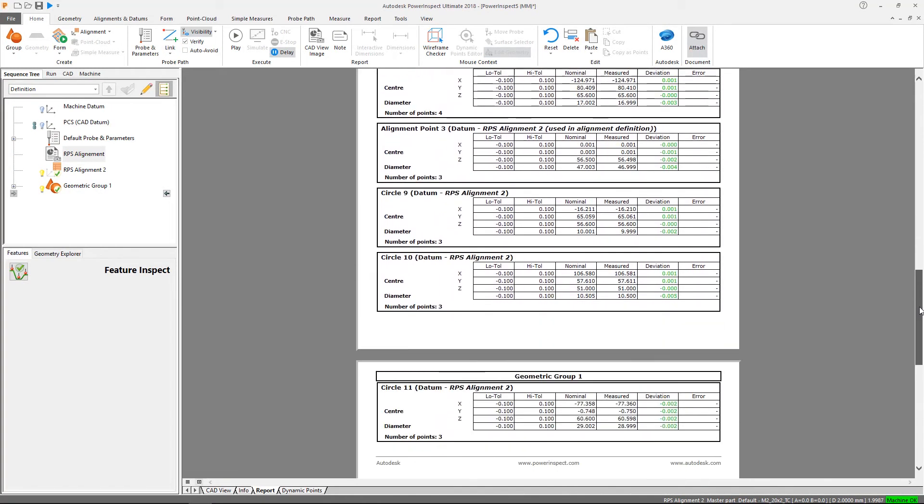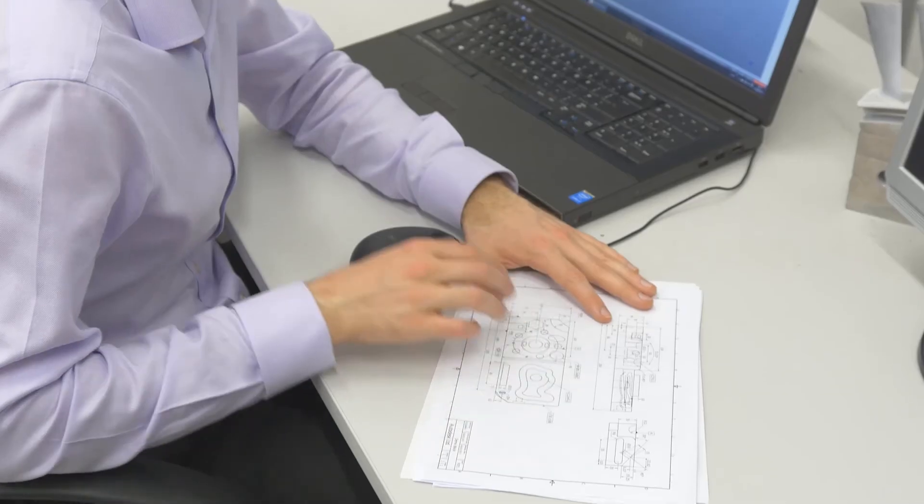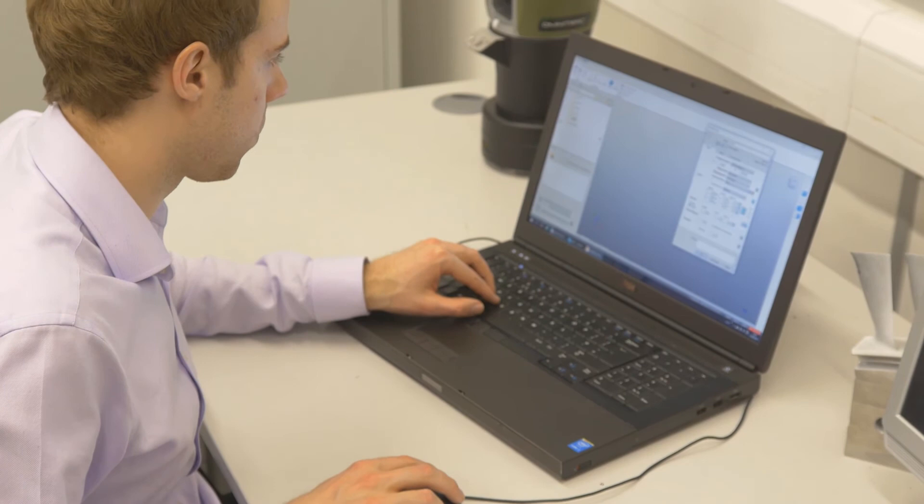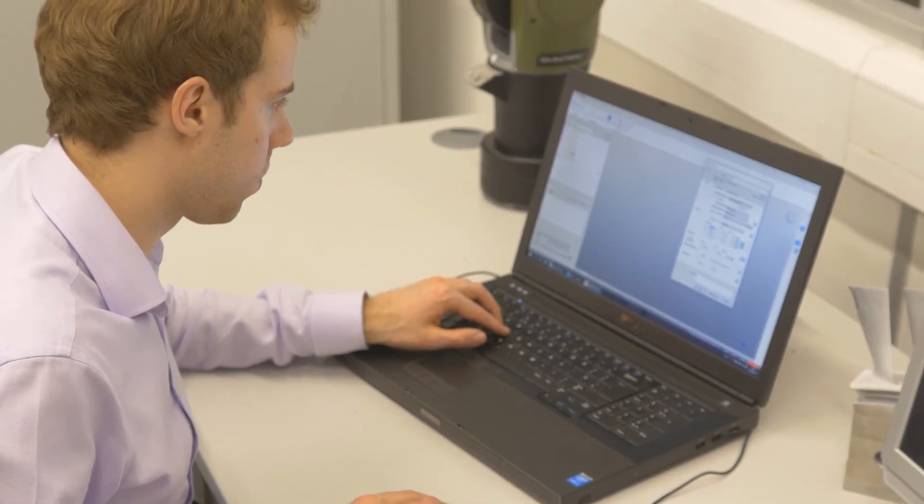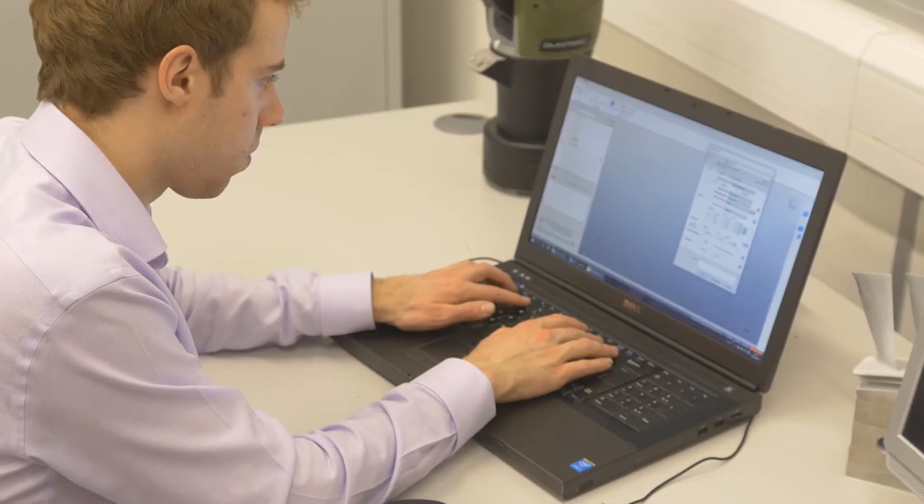PowerInspect is also very proficient at inspection without CAD. Using the built-in tools, we can manually enter any nominal data taken from 2D drawings if required. This versatile approach means you can still measure a part, even if you do not have a CAD file or drawing.